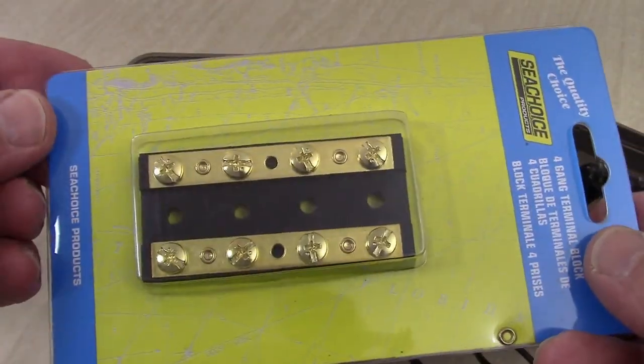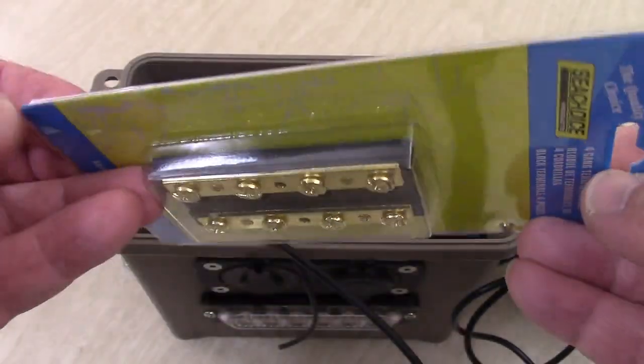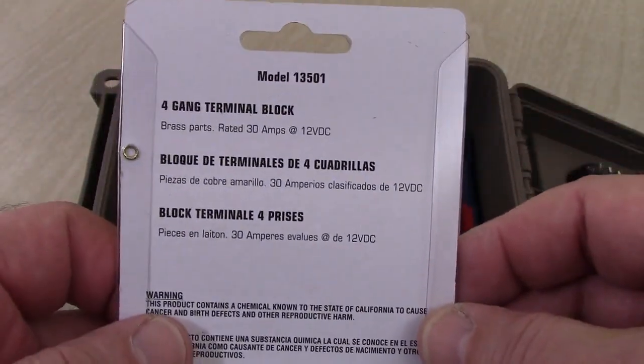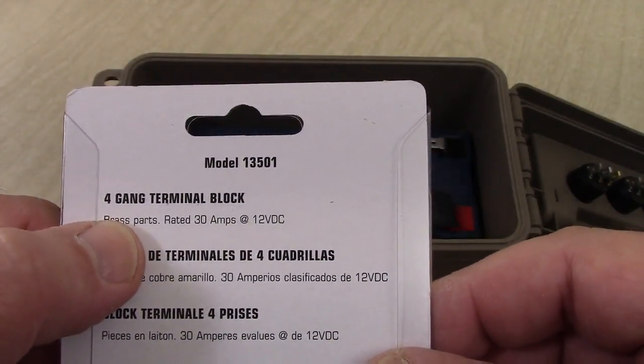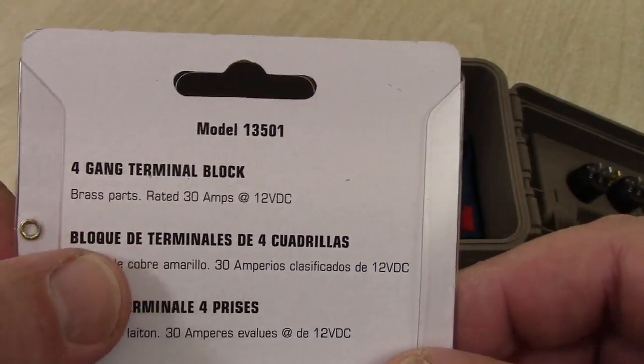And there's probably other ways you could do this, but I use these on all my ammo cans. This is a brass part. It's rated at 30 amps.